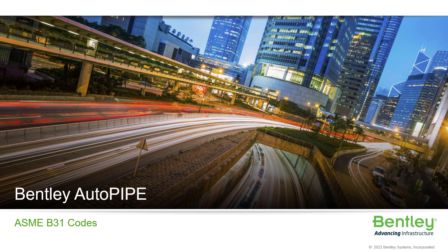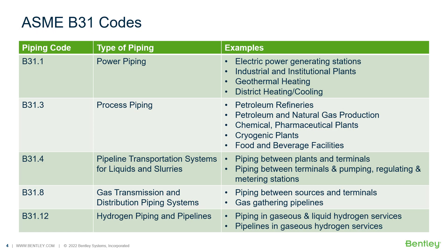Let's look a little further into the ASME B31 code offerings in AutoPipe. The ASME B31 codes are for pressure piping. B31-1 is for power piping, B31-3 is for process piping, B31-4 is for pipeline transportation systems for liquids and slurries, and B31-8 is for gas transmission and distribution piping systems.